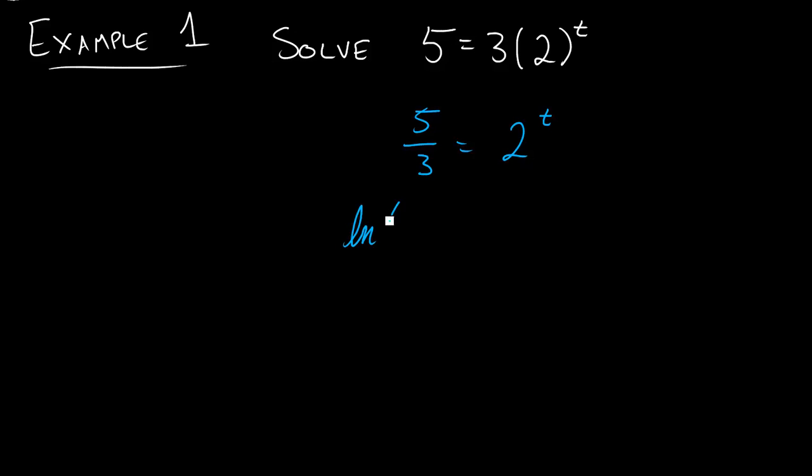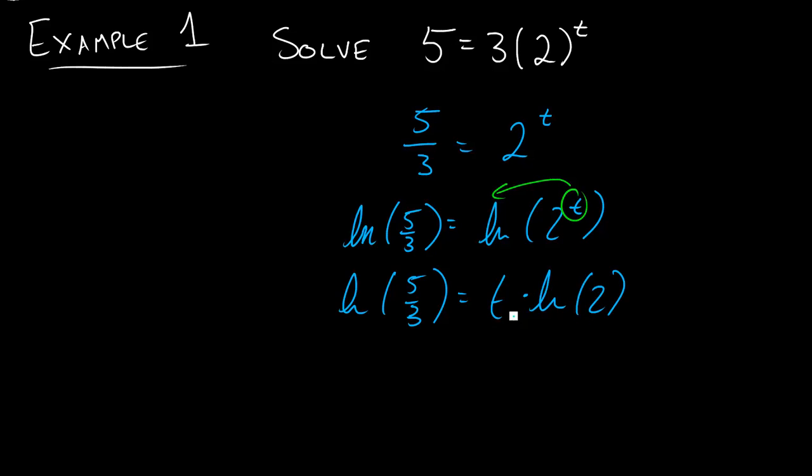And so we're going to do something we saw in video 1 where we're going to take the ln of each side. So we'll take the ln of 5/3 equals the ln of 2^t, and then we can use that rule 1 to bring that exponent out to the front. So we'll have the ln of 5/3 equals t times ln of 2. And so why is this better?